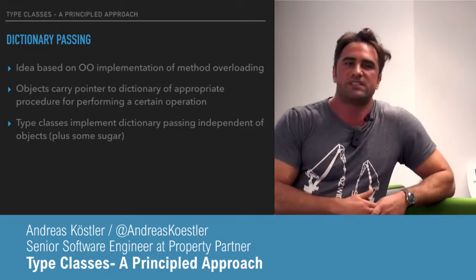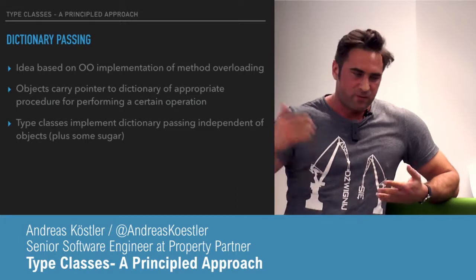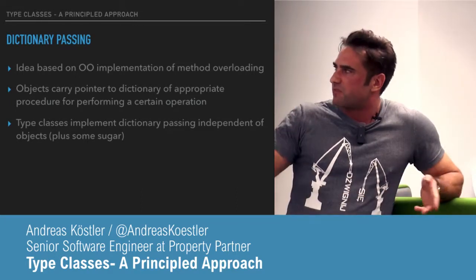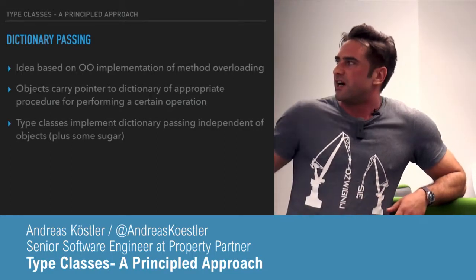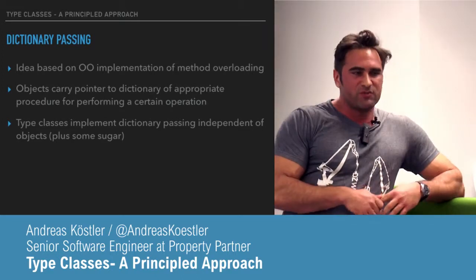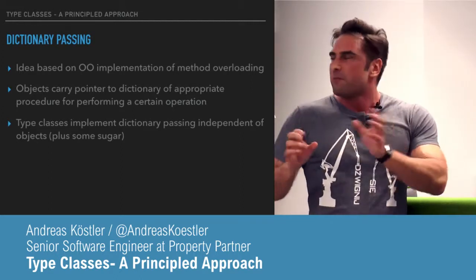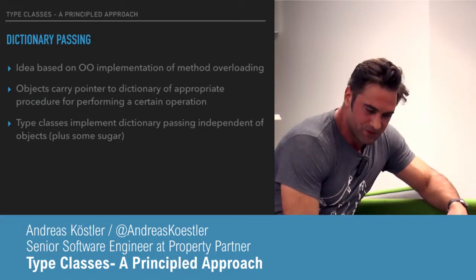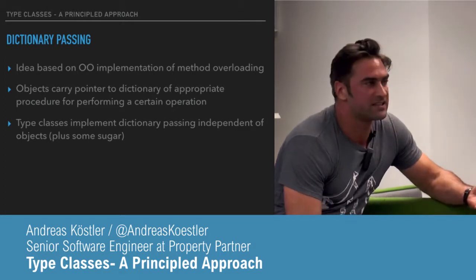In OO languages, method overloading is implemented through a pointer to a dictionary that, depending on the type of your parameters, chooses one implementation over the other. In the functional programming community, we usually strive to de-compose the object from the dictionary — we pull it apart — and that's basically what Wadler did. To show that, we'll derive how that dictionary passing is implemented.